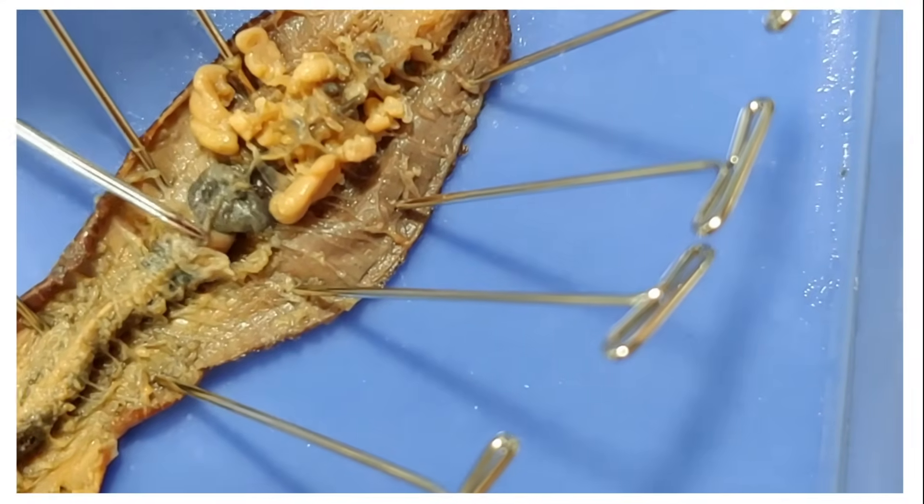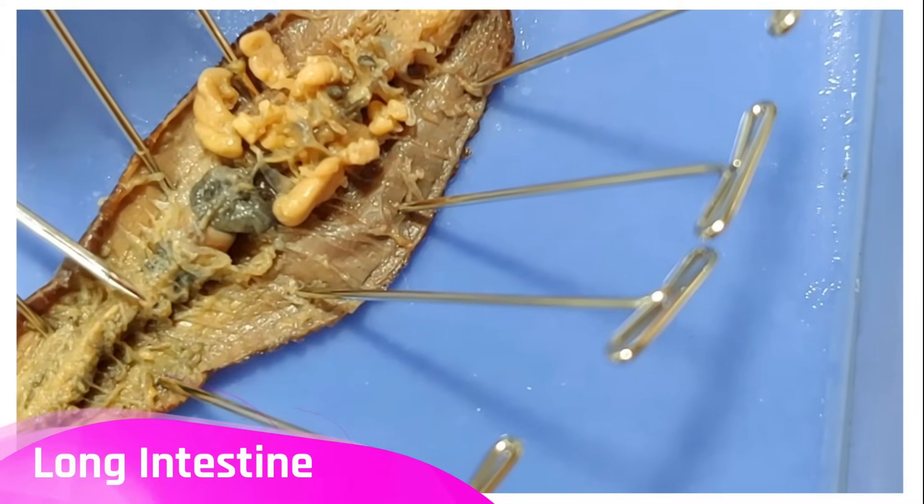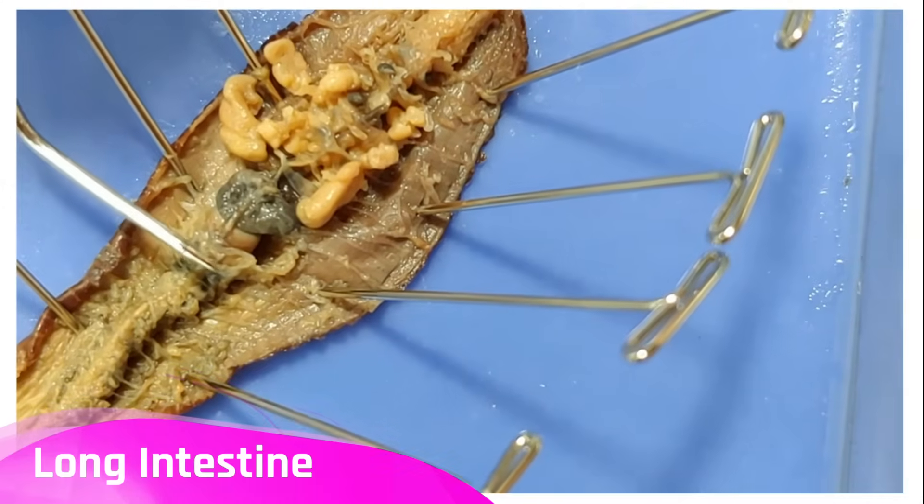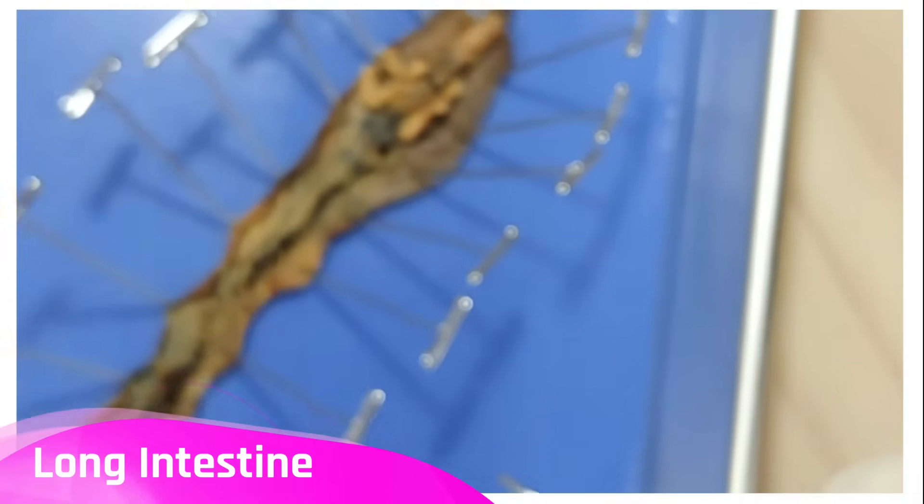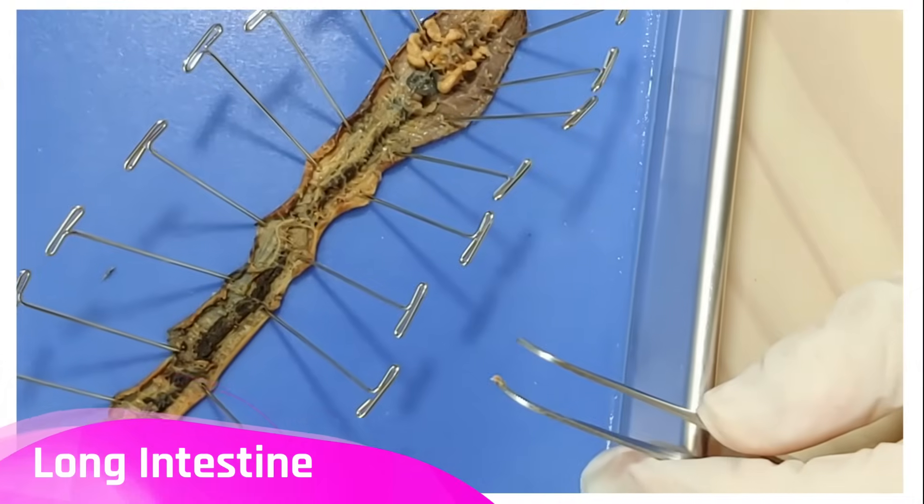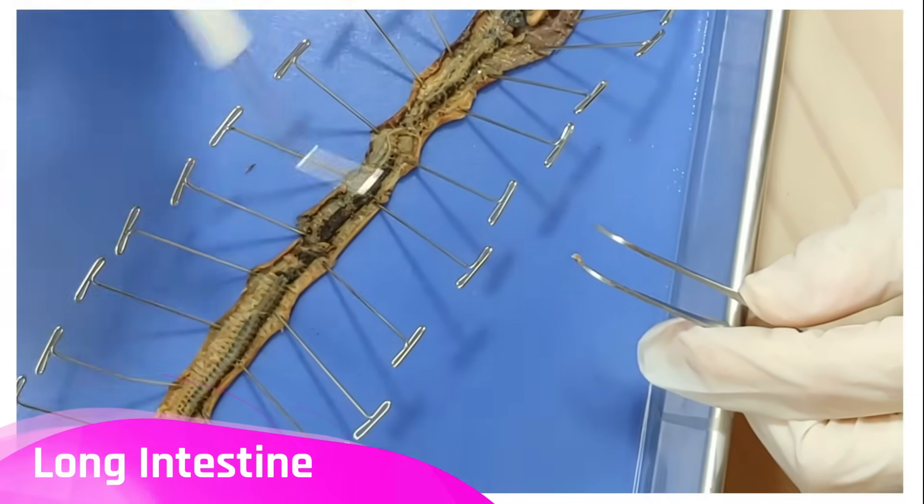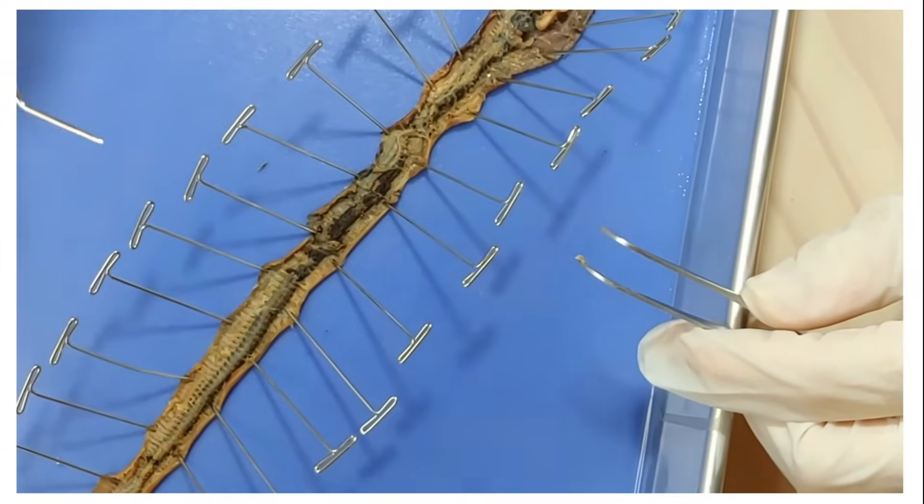Once the food leaves the gizzard, it enters this long intestine. The intestine is where the nutrients from the food are absorbed and it's really long. Focus. It's really long. There we go. So that more nutrients can be absorbed before the food gets kicked out.